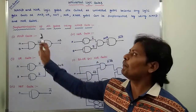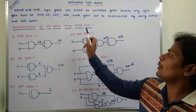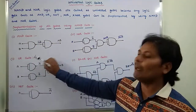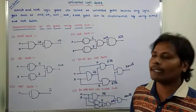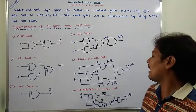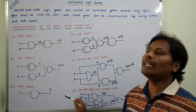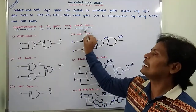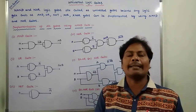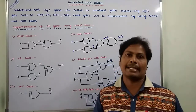So here, implementation of all gates using NAND gate. By using this NAND gate, we are implementing the AND gate, we are implementing the OR gate, we are implementing the NOT gate, we are implementing the NOR gate, we are implementing the XOR gate and exclusive NOR gate. So all the gates are implemented by using only one gate, that gate is called as NAND gate. Hence, we can say that NAND gate is called as a Universal Gate.